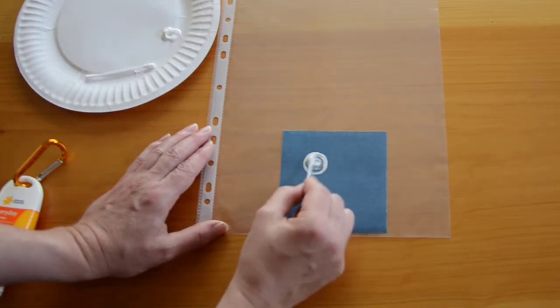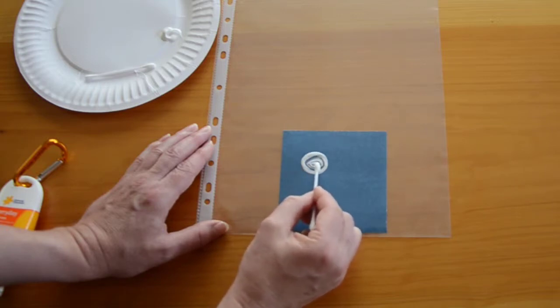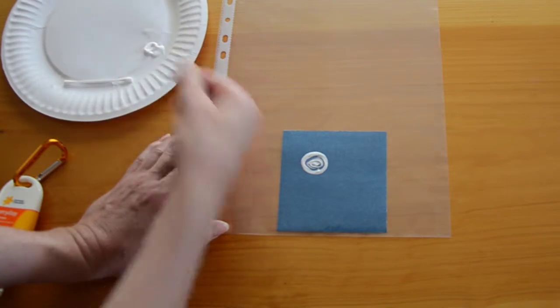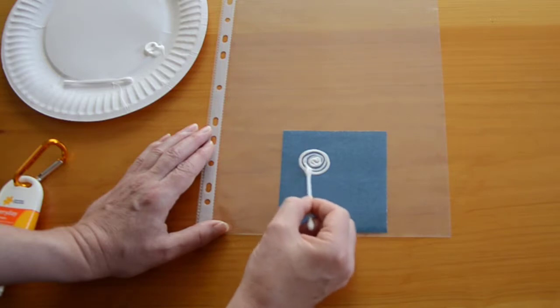And you can see sunscreen doesn't always go on evenly because we're going onto a plastic surface. So you'll find that there'll be lines. And that's actually a good thing because what you want them to do is see the difference between thick and thin. So I could add a bit more. I could do a nice spot.